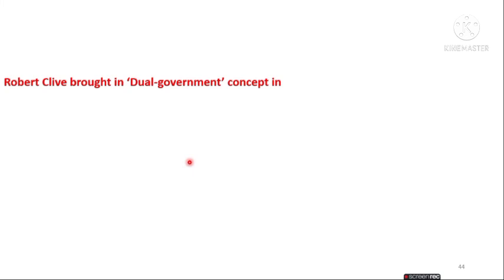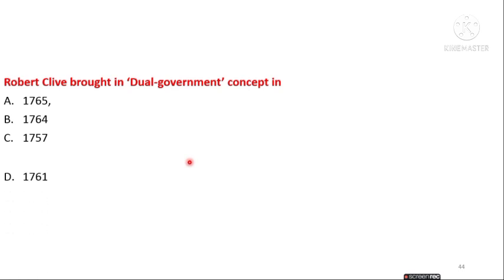The next question is: Robert Clive introduced the dual government concept in which year — 1765, 1764, 1757, or 1761? The answer is option A — in 1765, after the Battle of Buxar, Robert Clive introduced the dual government concept.